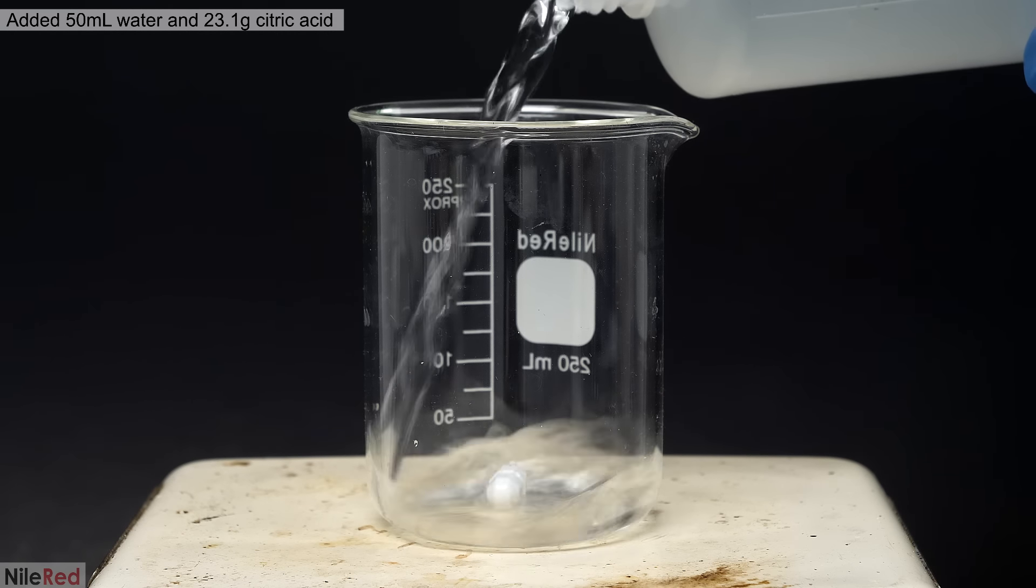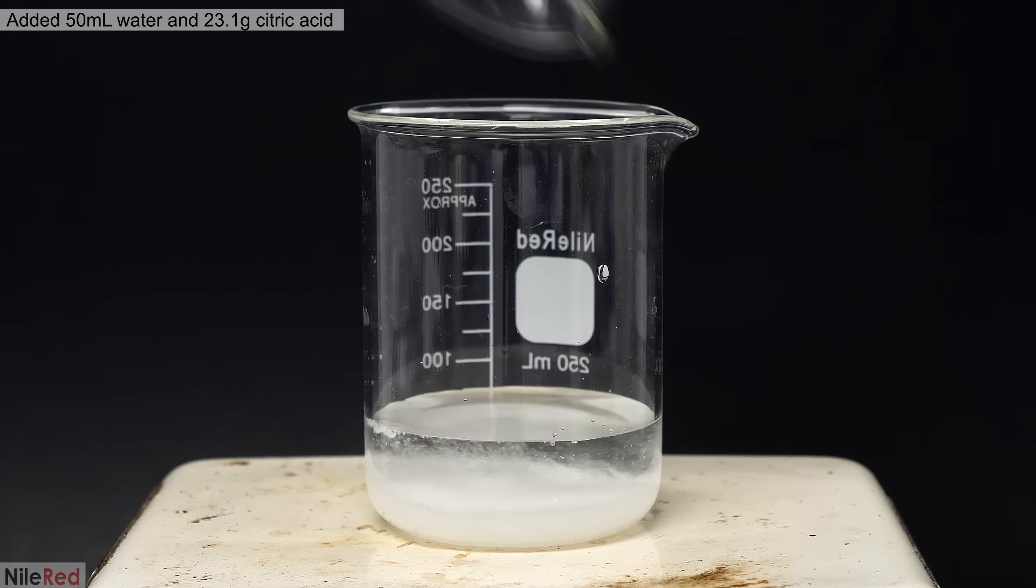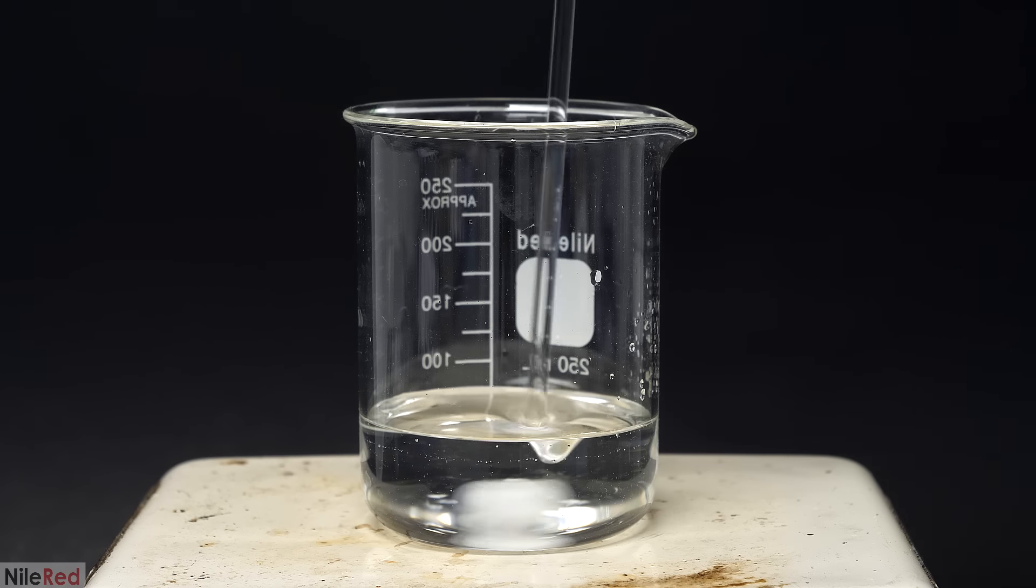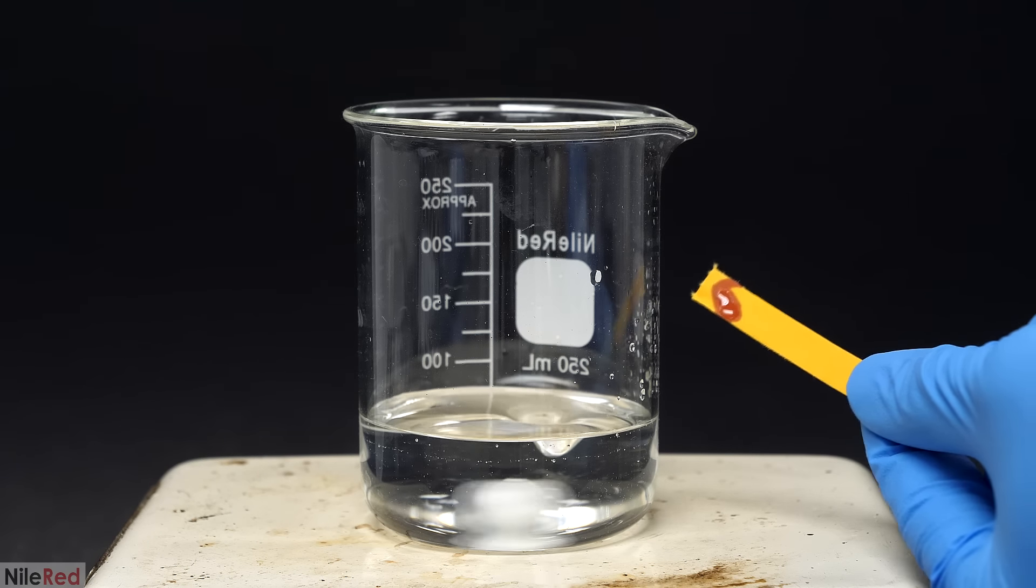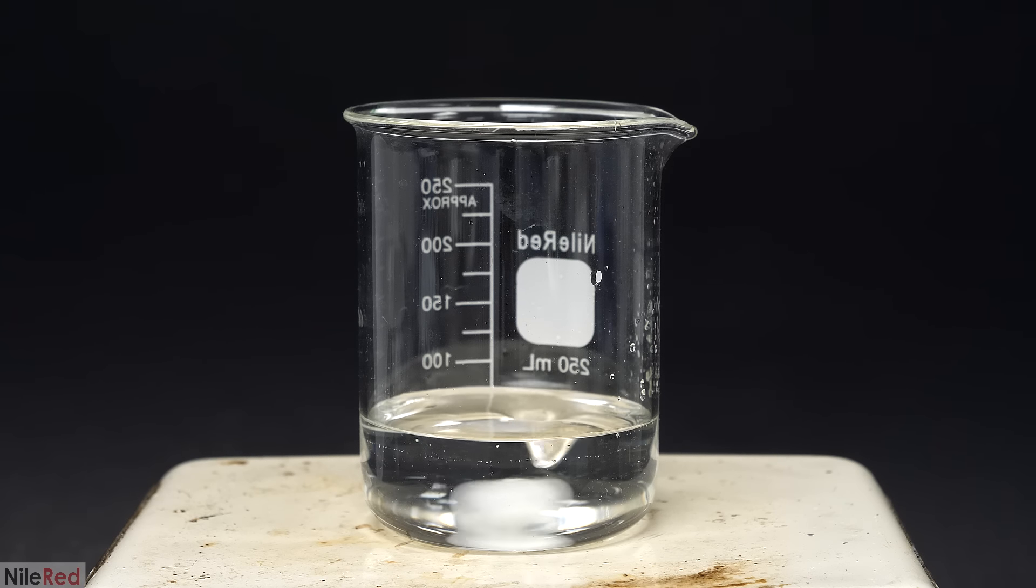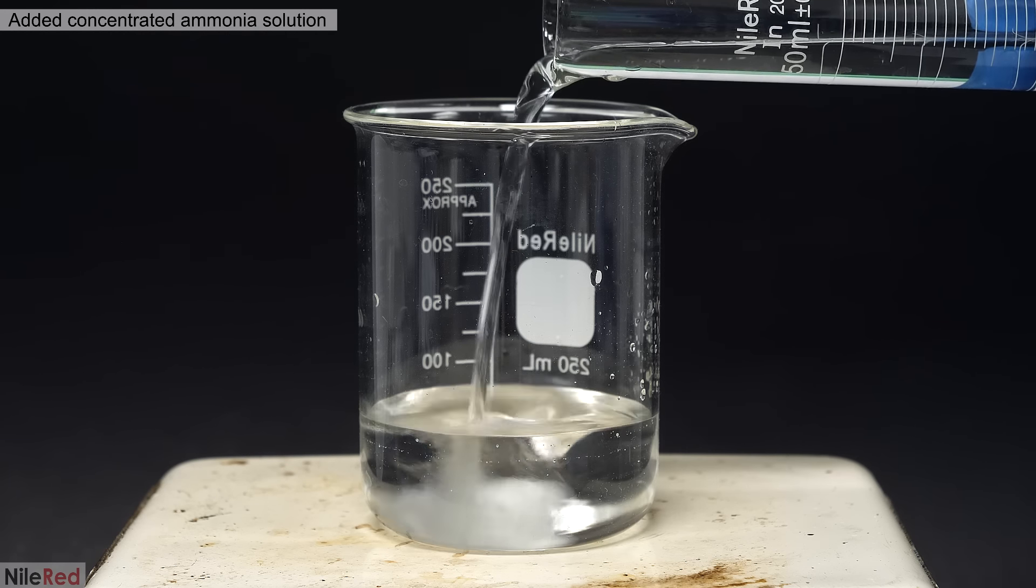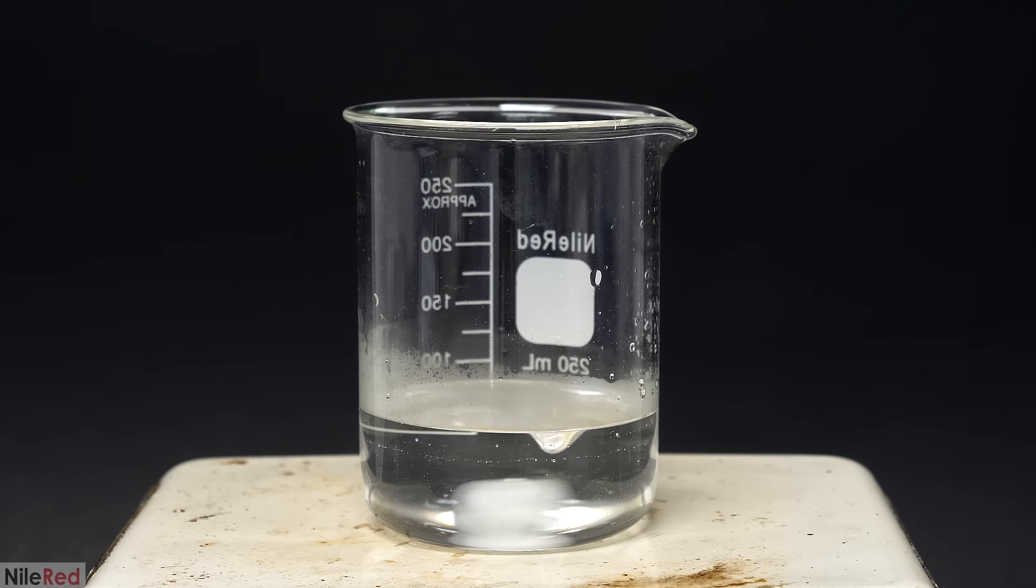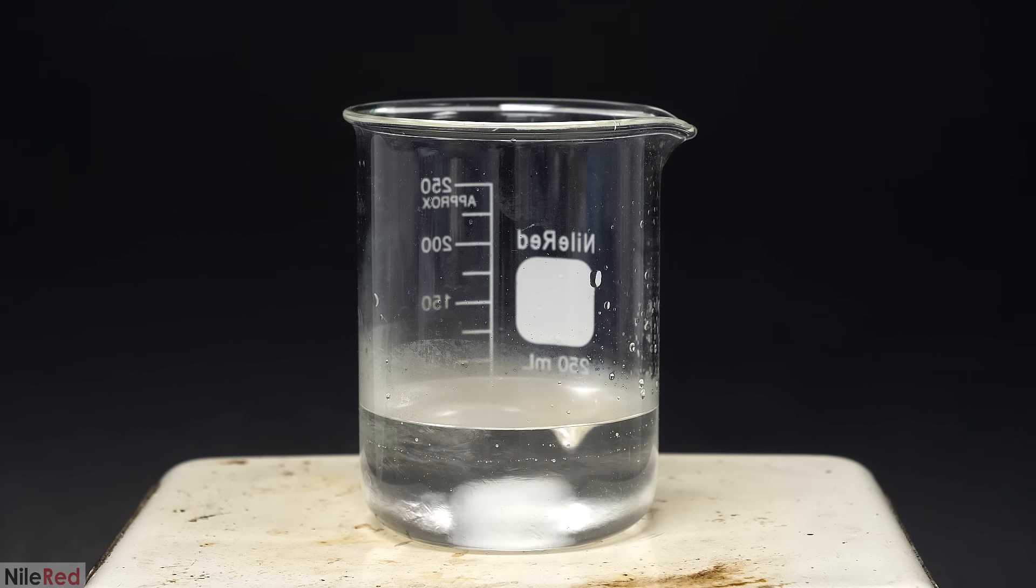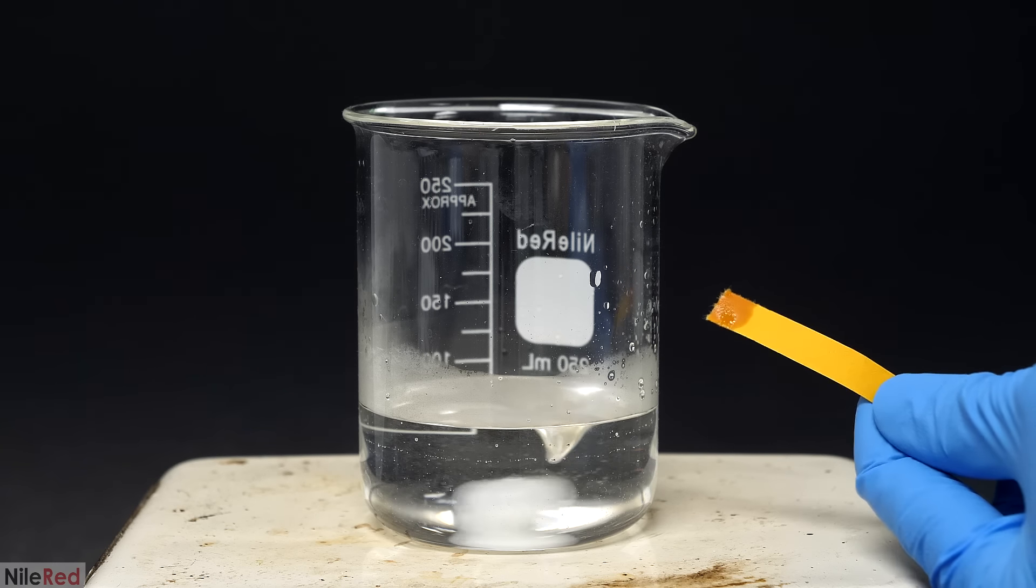I then moved on to making another solution. So to a beaker, I added 50 mils of water and 23.1 grams of citric acid. I turned on the stirring and when it all dissolved I tested the pH. The red color told me that it was highly acidic. The next step was to neutralize the citric acid by adding just enough concentrated ammonia solution. I wasn't exactly sure how much I needed because the concentration of my ammonia wasn't very exact, so I just had to add it in small portions and regularly check the pH.